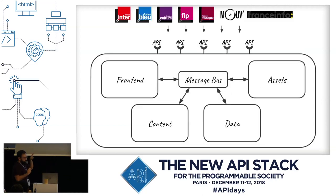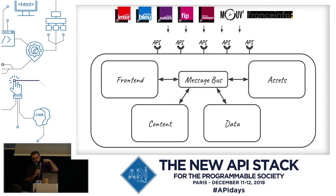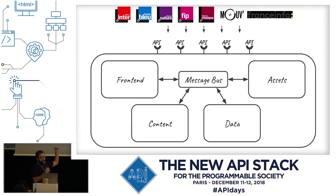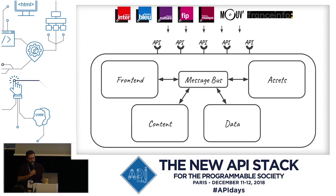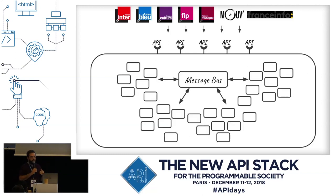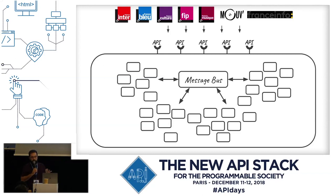Our architecture is centered around a message bus, which is RabbitMQ. We have areas of front-end management, content, data, and asset management. On top of this, we expose a bunch of APIs consumed by all the different websites and mobile apps. In reality, we have a lot of different microservices talking to the bus — some expose APIs, some just consume messages. For example, we have microservices to crop images. On production we run Kubernetes with 70 services deployed on multiple instances, around 400 pods.